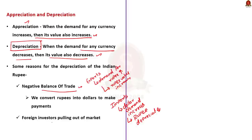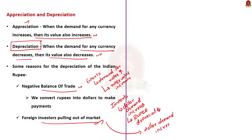When foreign investors pull out of the Indian market, they withdraw their funds in Indian currency. But they have to convert their withdrawn money into dollars, and for this, they purchase dollars in the forex market. As a result, the demand for dollar increases and the demand for rupee decreases. So, when foreign investors pull their investments out of India, then rupee depreciates. Basically, activities that drain our forex reserves will eventually lead to rupee depreciation.